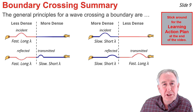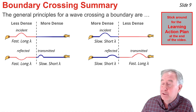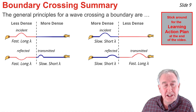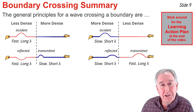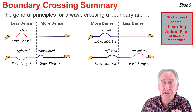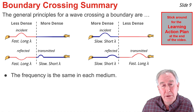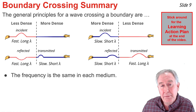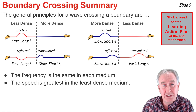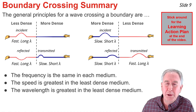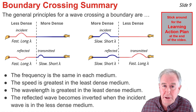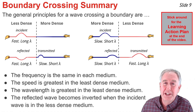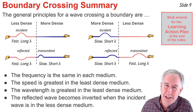Here's a quick summary of the two situations we just discussed. The before-and-after diagrams on the left depict a pulse in the less dense material heading towards the more dense material, and those on the right depict a pulse in the more dense material heading towards the less dense material. Four summary points: first, frequency is the same in each of the media; second, speed is always greatest in the least dense material; third, wavelength is always greatest in the least dense material; and fourth, inversion of the reflected pulse only occurs when the incident pulse is in the less dense material heading towards the more dense material.